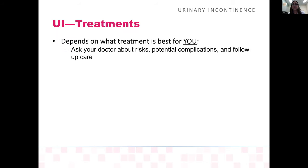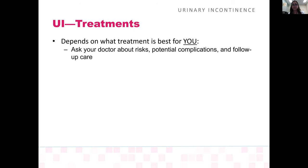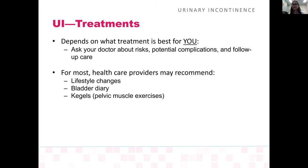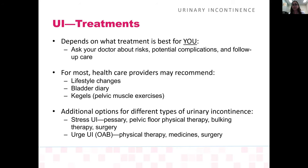What are the treatments for urinary incontinence? It depends on what is best for you — always ask your doctor about risks, potential complications, and follow-up care. Most commonly we start with lifestyle changes, a bladder diary to monitor urination and symptoms, and Kegel exercises. Additional options for stress incontinence include a pessary, pelvic floor physical therapy, bulking agents, and surgery. For urgency incontinence: physical therapy, medication, and surgery.